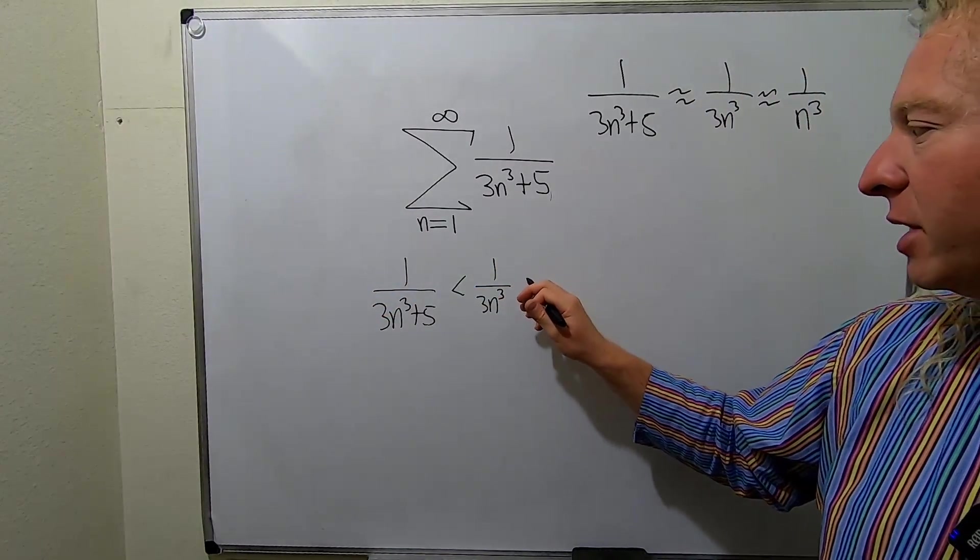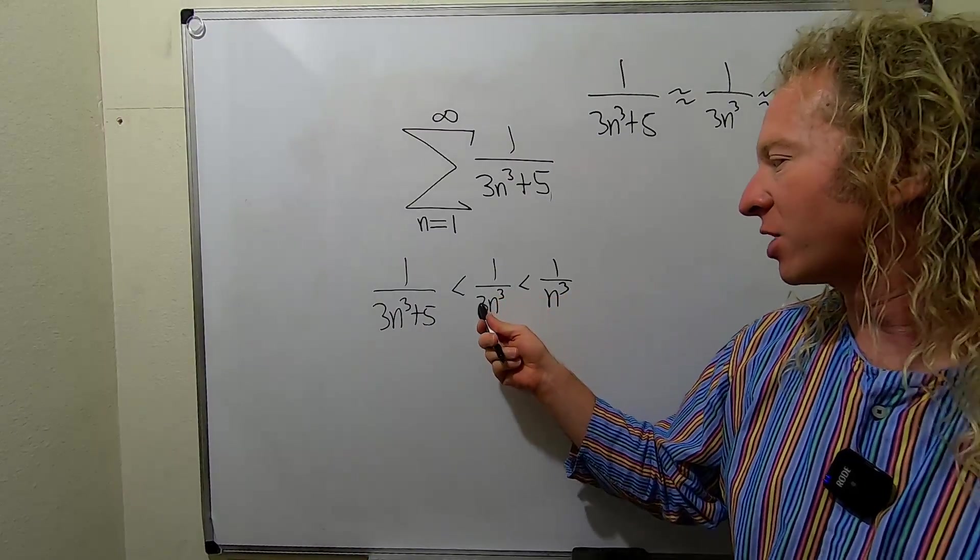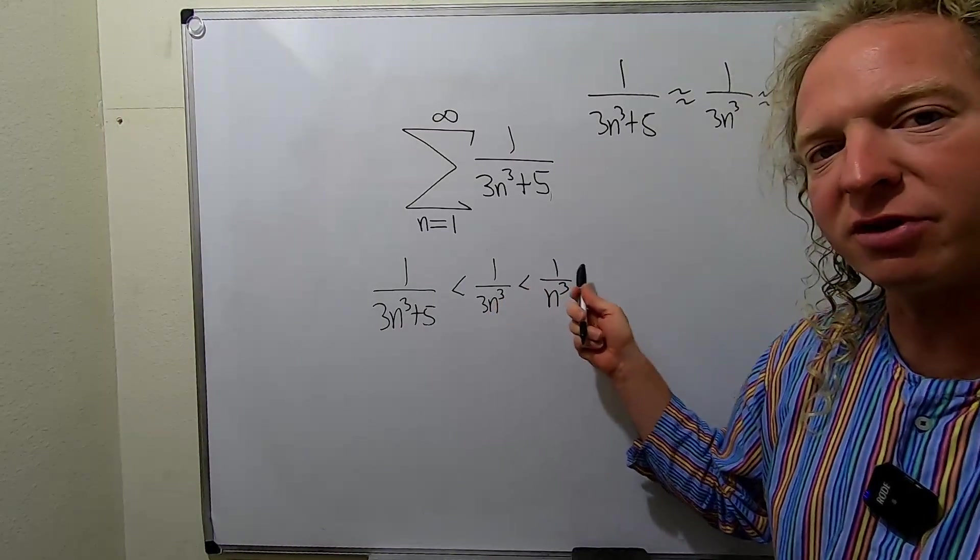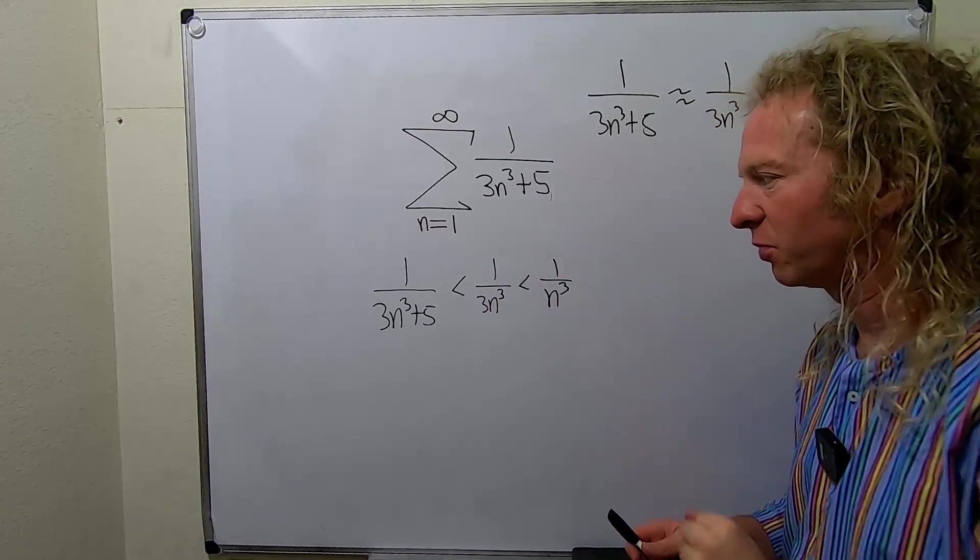You can also drop the 3 now because this fraction is smaller than this one, since 3n cubed is bigger than n cubed, so this fraction is smaller.